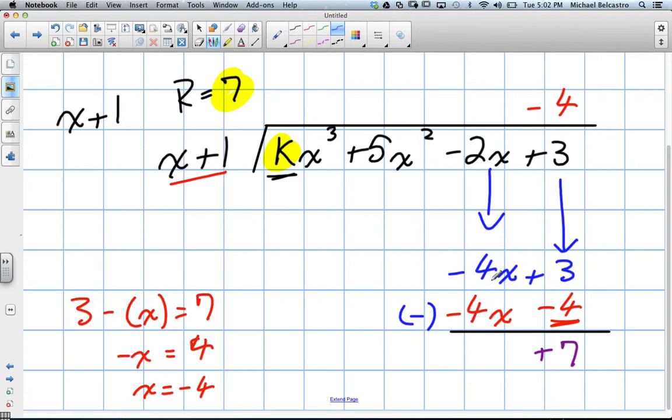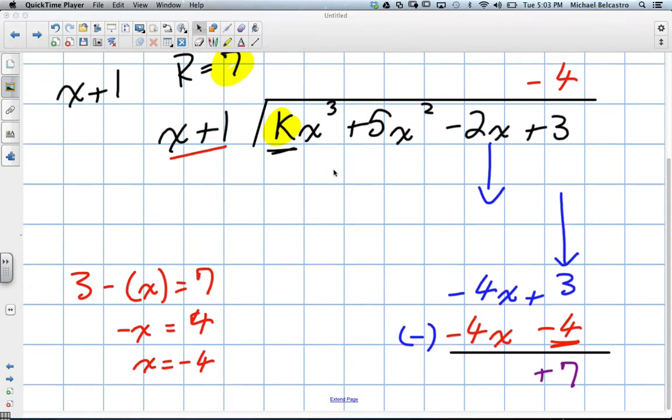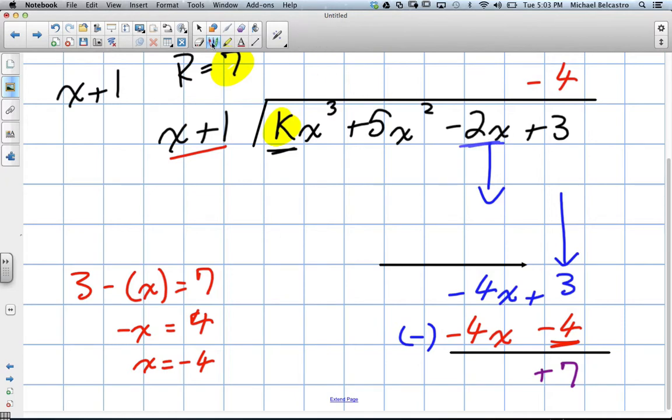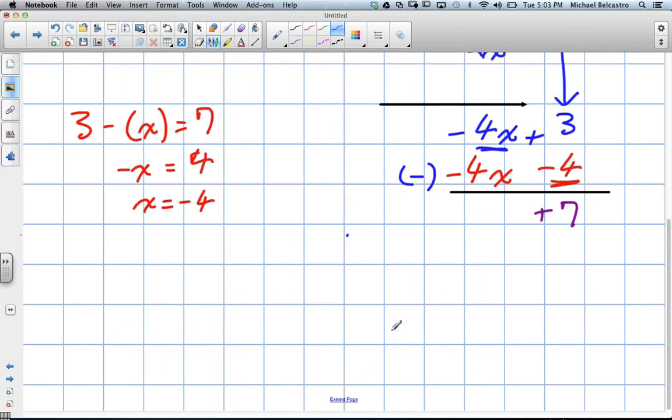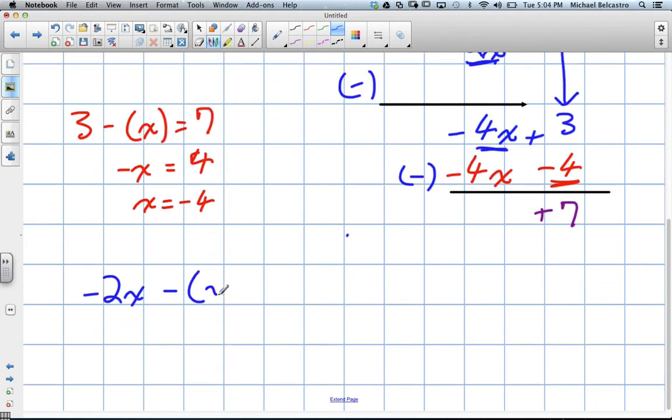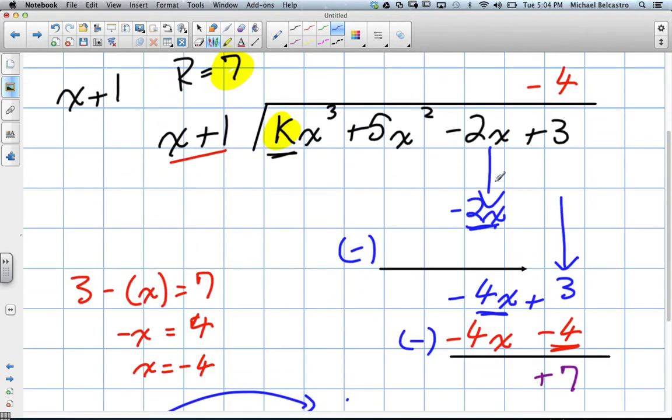From that negative 4x, we must have subtracted something. What did we subtract our negative 2x by to get negative 4x? We subtracted our negative 2x to get negative 4x. We bring this negative 2 over, we get negative y equals negative 2x, which is y equals 2x. That means this value here must have been positive 2x.